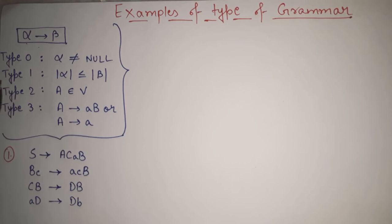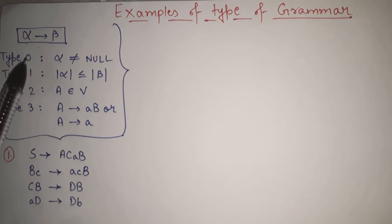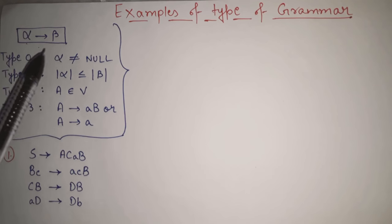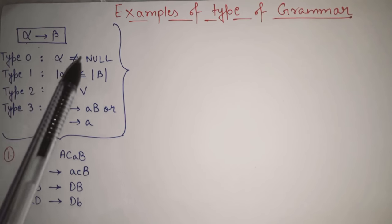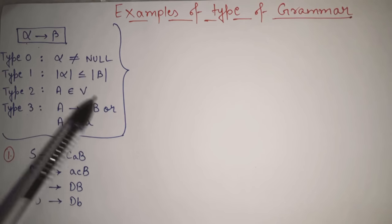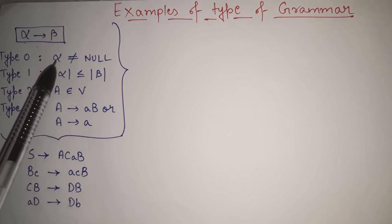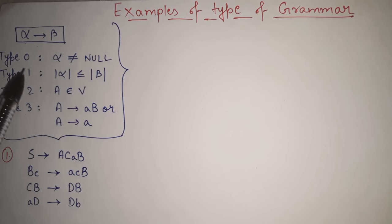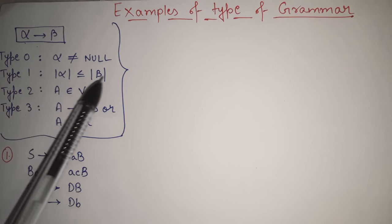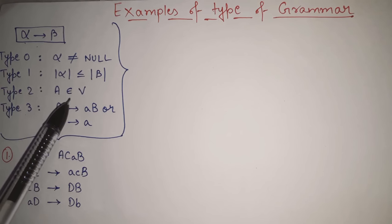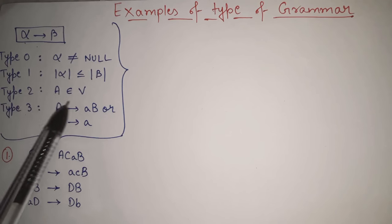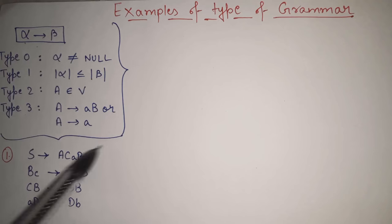Type 2 is context free language. Type 1 is context sensitive language. And type 0 is unrestricted grammar. In unrestricted grammar, as the name itself indicates, there is no restriction other than alpha not equal to null. As I showed in the previous video, there are relations between these grammars — whatever condition is in type 0 will by default be present in type 1, type 2, and type 3 also. Type 1's restriction will carry over to type 2 and type 3 as well.